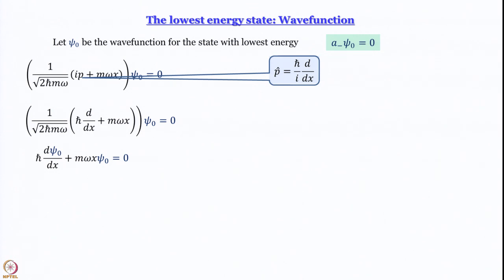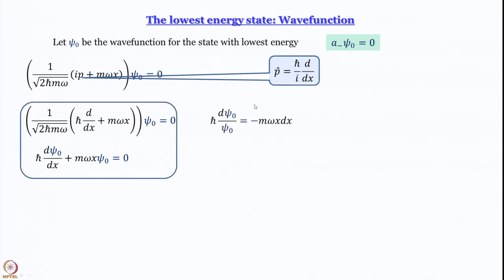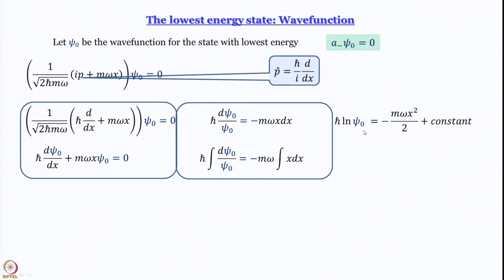Rearranging so that everything in ψ_0 is on one side and everything in x is on the other: ℏ·dψ_0/ψ_0 = −mωx·dx. Integrating both sides: ℏ·∫dψ_0/ψ_0 = −mω·∫x·dx. The left side gives ℏ·ln(ψ_0) and the right side gives −mωx²/2, plus a constant of integration. For convenience, we write the constant in logarithmic form as ℏ·ln(A), so that we can bring it to the other side.